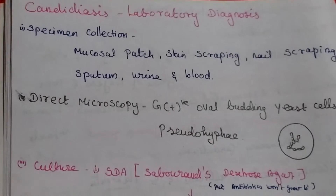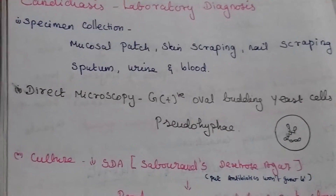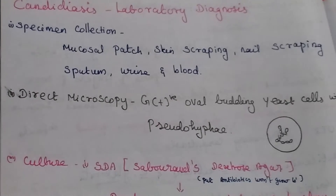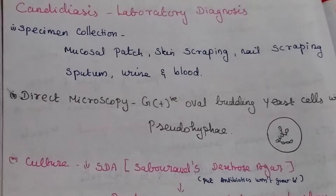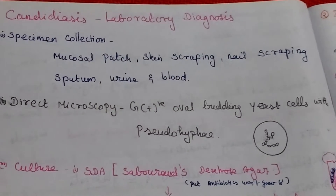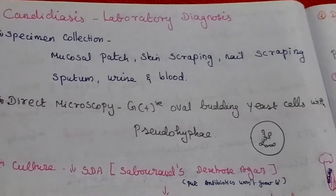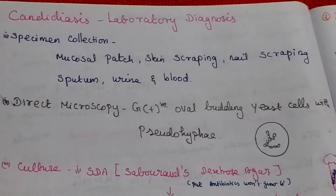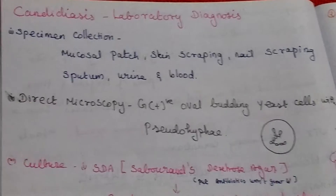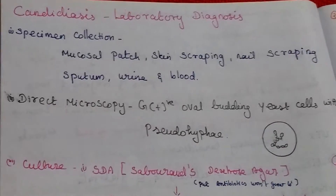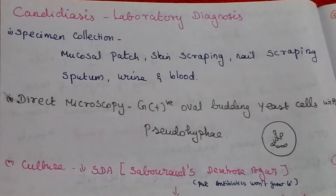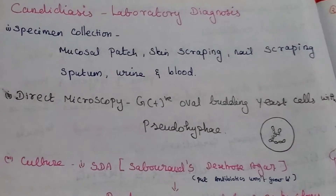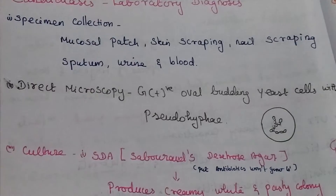Laboratory diagnosis of candidiasis. First is specimen collection. The specimens collected are based on the site of infection: mucosal swabs, skin scraping, nail scraping, sputum, urine, and blood samples.